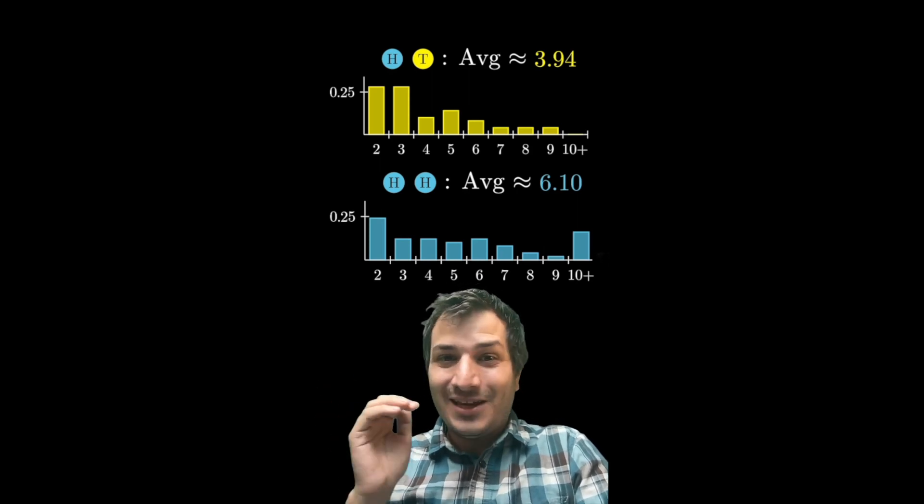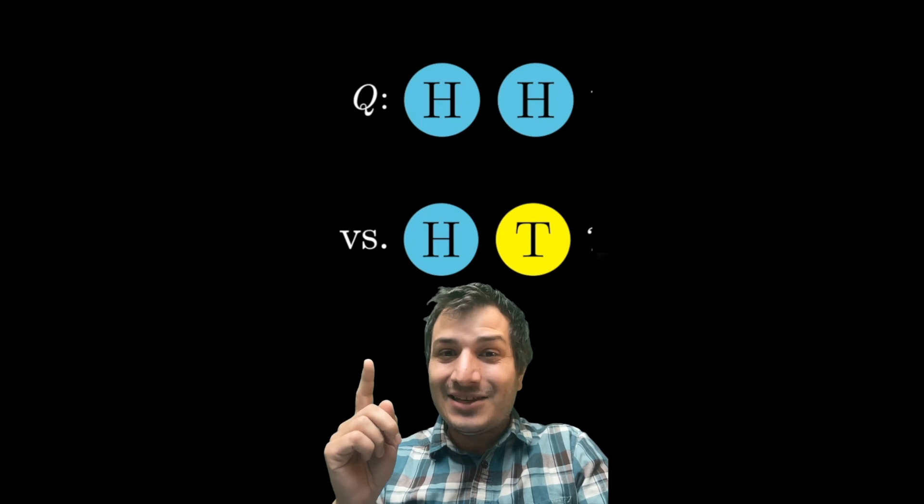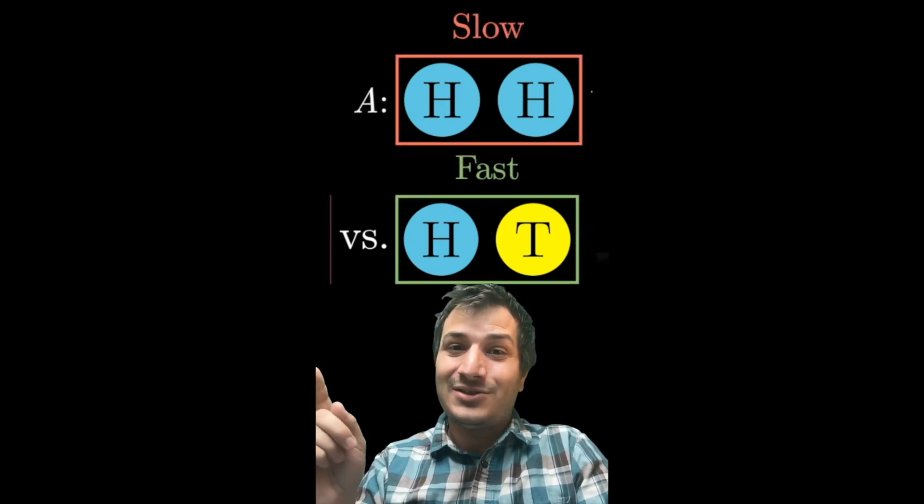Heads, heads, and heads, tails are different. So the answer to the question is that heads, heads is slow. Heads, heads takes a long time. Heads, tails is fast.